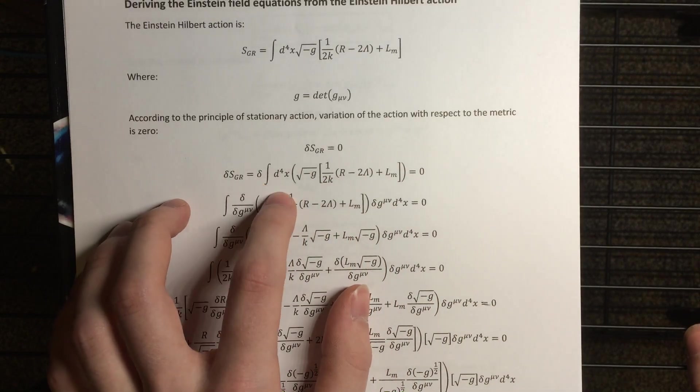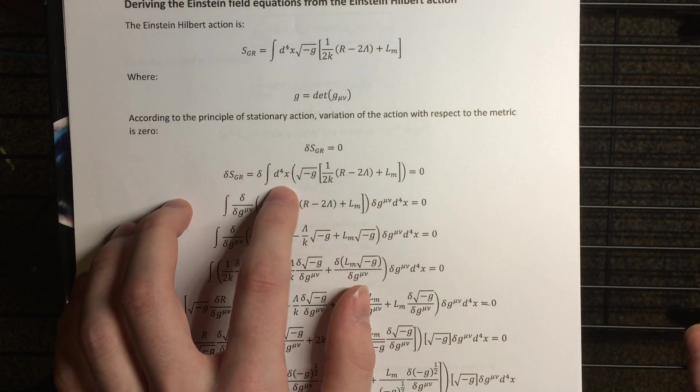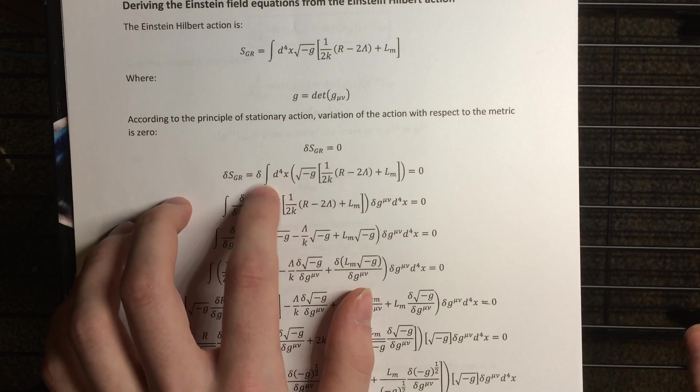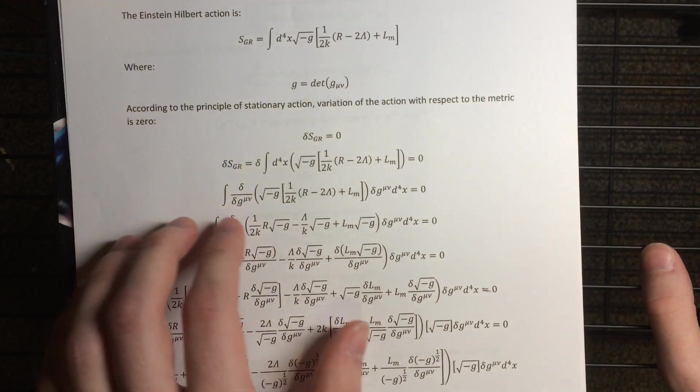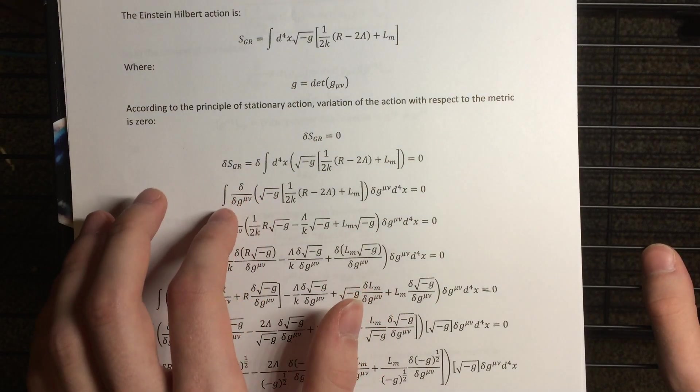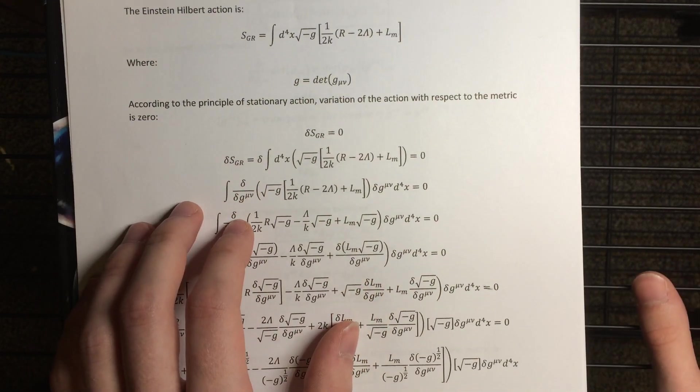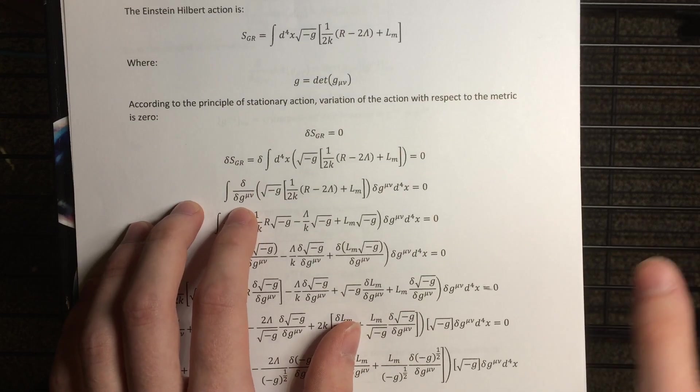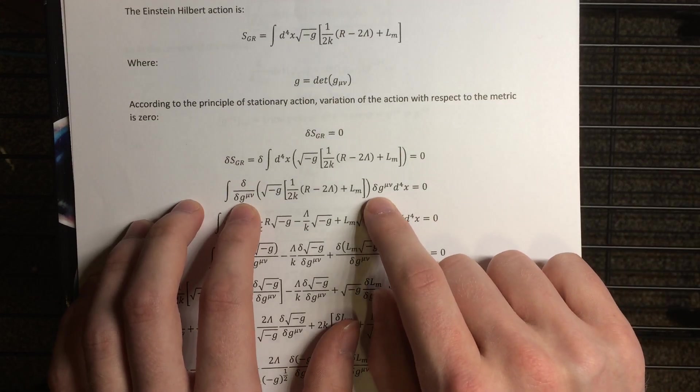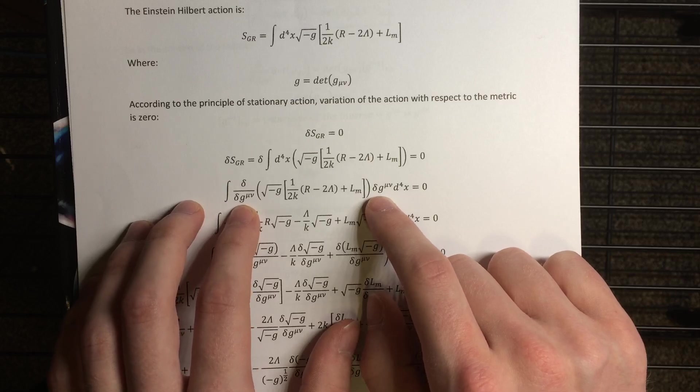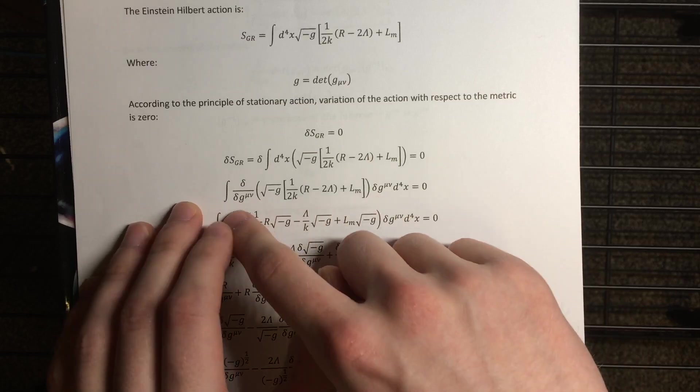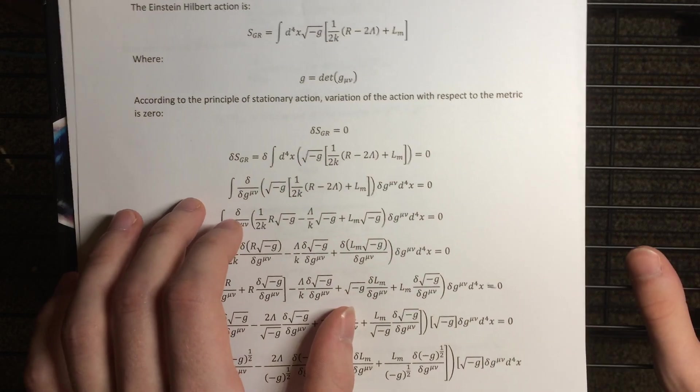Now what we can do, this commutes with the functional variation, so it commutes with this 4 space-time integral. So then we can pass it through as I've done here, but also we want to vary the action specifically with respect to the metric tensor. So we multiply and divide by the variation of the metric to make this a proper functional derivative with respect to the metric.